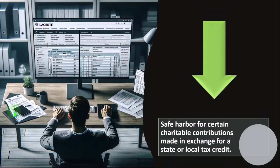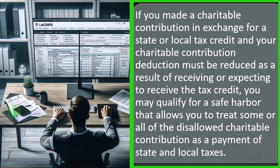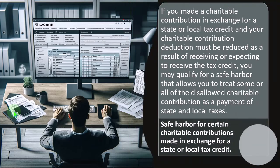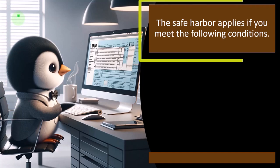Safe harbor for certain charitable contributions made in exchange for a state or local tax credit. If you made charitable contributions in exchange for a state or local tax credit and your charitable contribution deduction must be reduced as a result of receiving or expecting to receive the tax credit, you may qualify for a safe harbor that allows you to treat some or all of the disallowed charitable contribution as a payment of state and local taxes. That's kind of a specialty area that might not come up too much, but if you have higher income tax planning situations, then you can take a look at that in more detail.